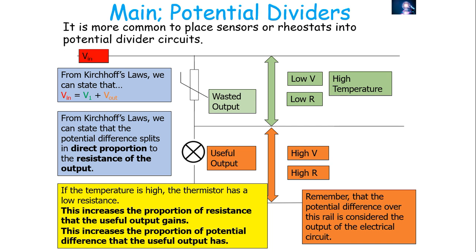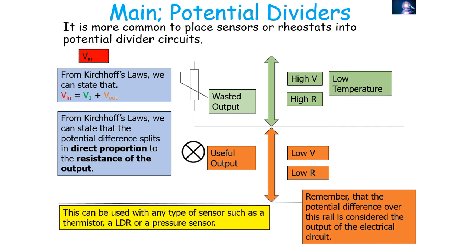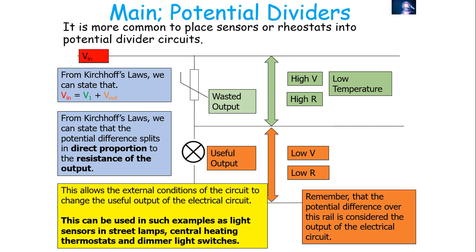This is a way in which external conditions can affect the useful output of a circuit, and obviously vice versa as well. If you had a low temperature that would give a high resistance to the thermistor, so it would take proportionally more potential difference compared to the useful output of the bulb, meaning the bulb has less potential difference and gets dimmer. This can be used with any type of sensor — a thermistor, an LDR, or a pressure sensor — allowing external conditions to affect the useful output. Applications include light sensors in street lamps, central heating thermostats, and dimmer light switches.